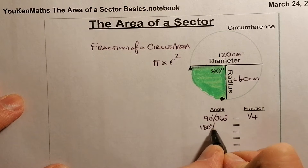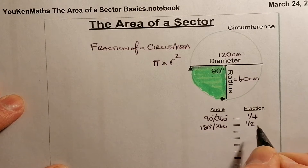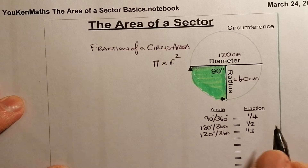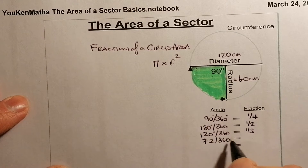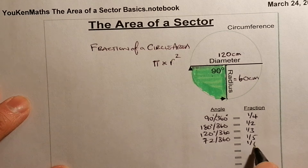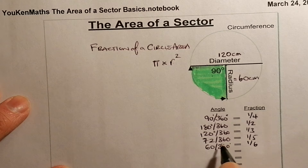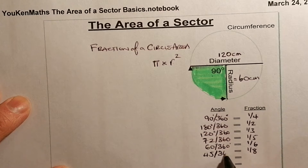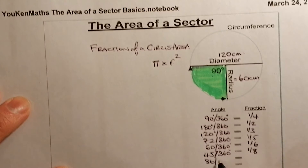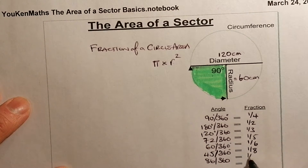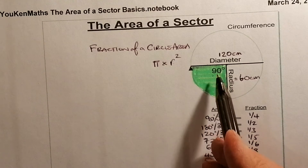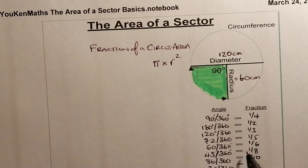If the angle at the centre is 180 degrees, dividing by 360 gives us a half. If it's 120 degrees, that's a third of a circle. 72 degrees divided by 360 gives us a fifth. A sixth of a circle would be 60 degrees over 360. If the angle is 45, dividing by 360 gives an eighth. 36 degrees over 360 gives a tenth. And 30 over 360 gives a twelfth. All of these angles could give an easy fraction for non-calculator work.